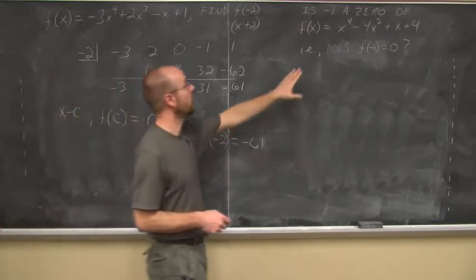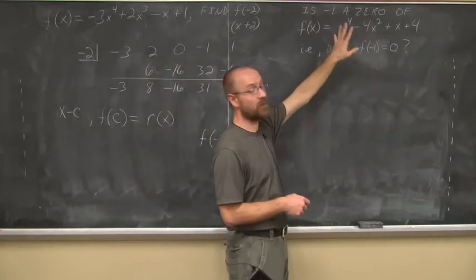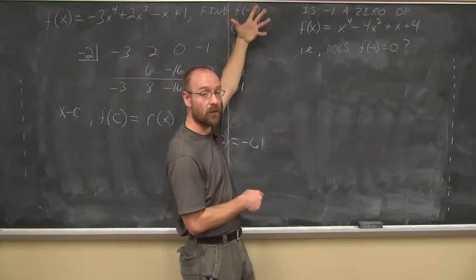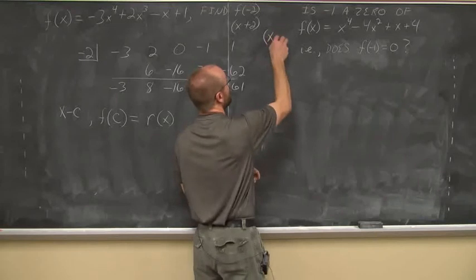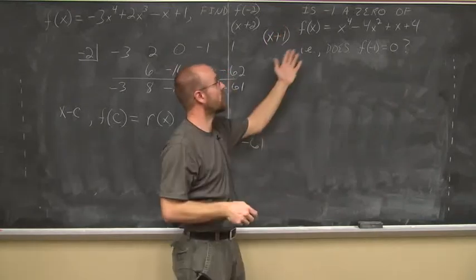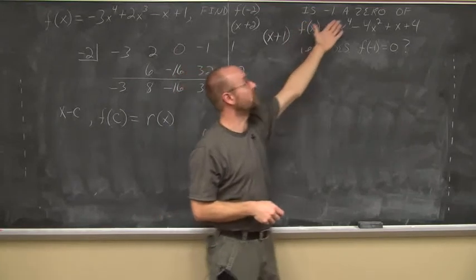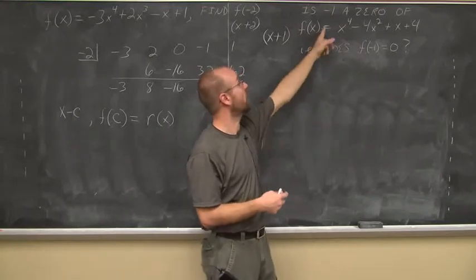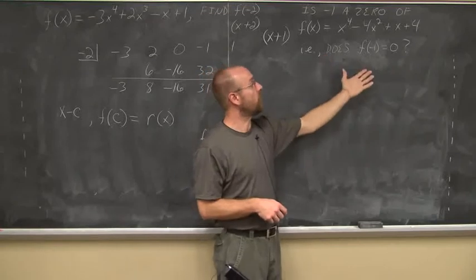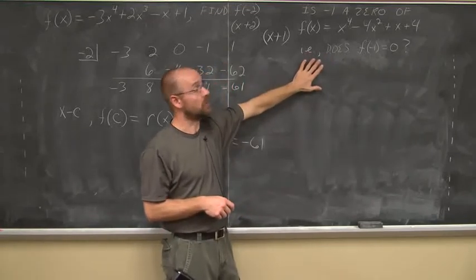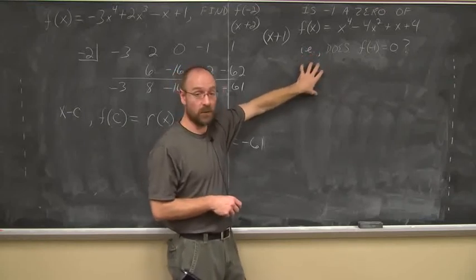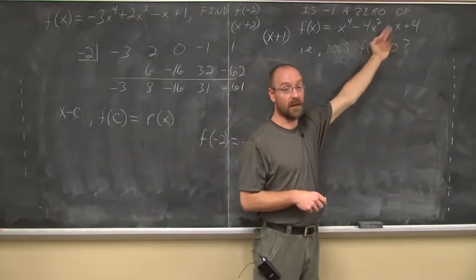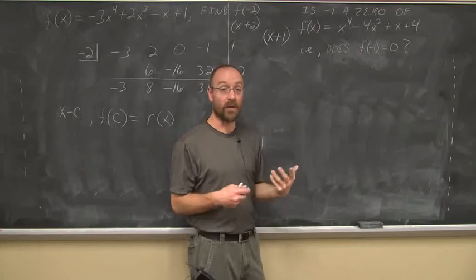Let's look at the next example. It says: is negative 1 a zero of f of x? This is another terminology that gives us a c value. Just like negative 2 was the c value before, this is asking: is x minus negative 1 a factor of this polynomial? In order to be a zero, f of negative 1 must equal 0. The y value is 0 when x is negative 1 — that's our definition of a zero. We can find that using synthetic division. So I'm going to ask you to practice synthetic division — do this as your quiz for this video. Take this, do synthetic division with this c value of this polynomial, don't forget to have your placeholders, and see if this is or is not a factor.